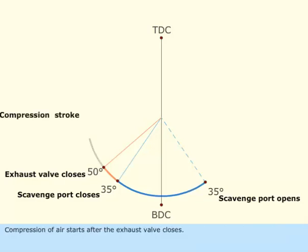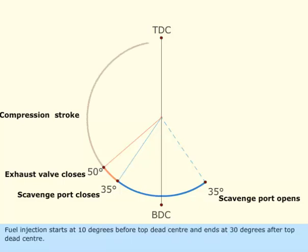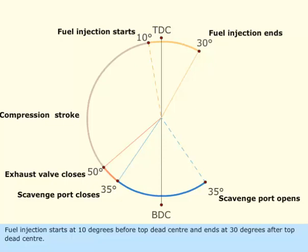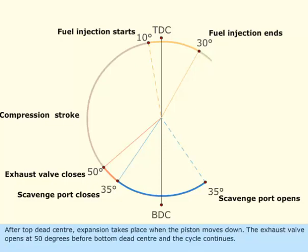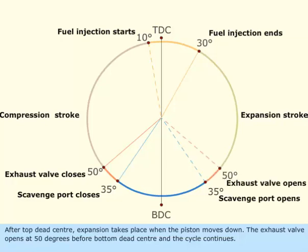Compression of air starts after the exhaust valve closes. Fuel injection starts at 10 degrees before top dead center and ends at 30 degrees after top dead center. After top dead center, expansion takes place when the pistons move down. The exhaust valve opens at 50 degrees before bottom dead center, and the cycle continues.